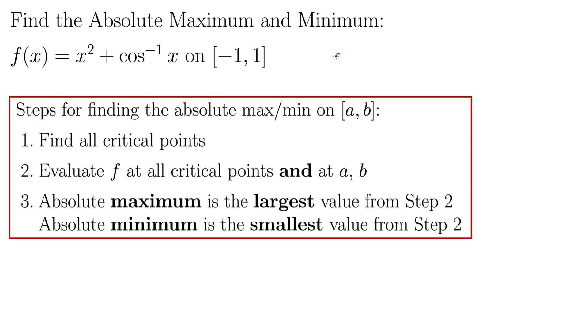One more thing to remember is that the derivative of arc cosine of x, just in case that slipped your mind, is negative one over the square root of one minus x squared. So pause the video. Try this out. See if you can find that absolute maximum and minimum and then we'll talk about it together.